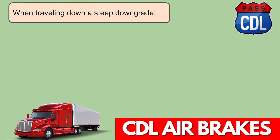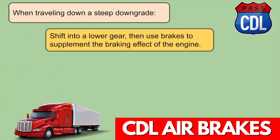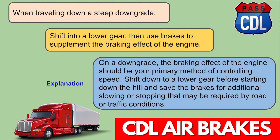When traveling down a steep downgrade, shift into a lower gear, then use brakes to supplement the braking effect of the engine. On a downgrade, the braking effect of an engine should be your primary method of controlling speed. Shift to a lower gear before starting down the hill and save the brakes for additional slowing or stopping that may be required by road or traffic conditions.